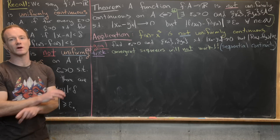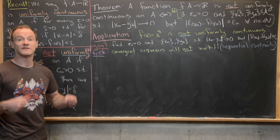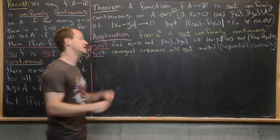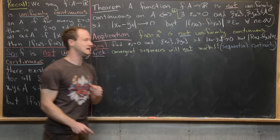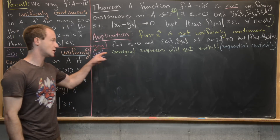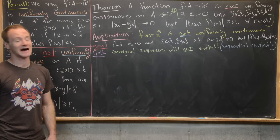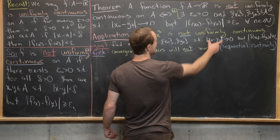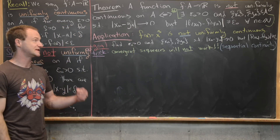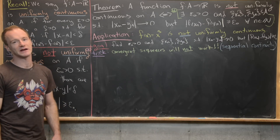An important trick: convergent sequences won't work. If xn and yn both converge to the same limit, sequential continuity implies f(xn) − f(yn) → 0 as well. So we must find divergent sequences whose difference nonetheless converges to zero — note that |xn − yn| → 0 does not require xn or yn to converge.